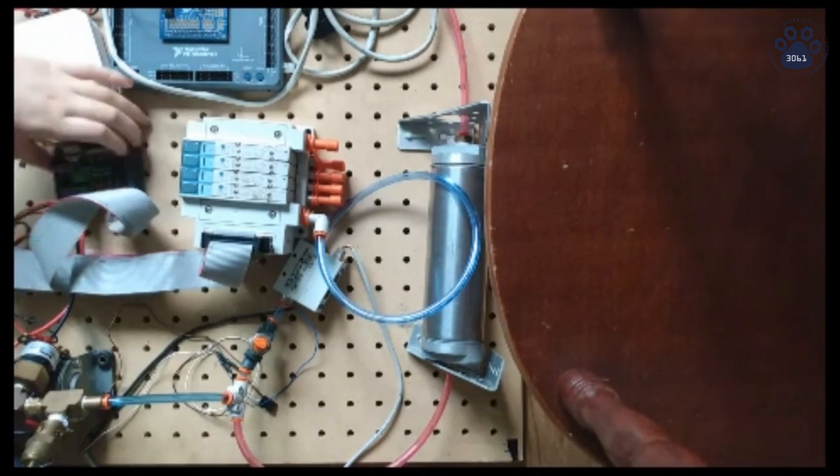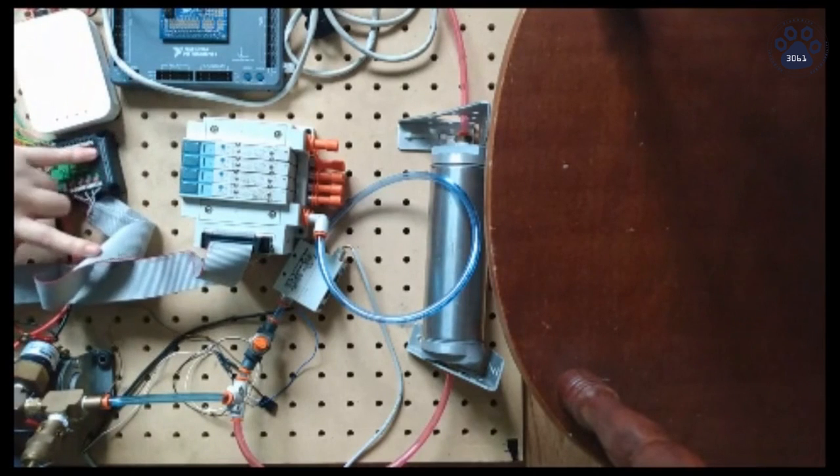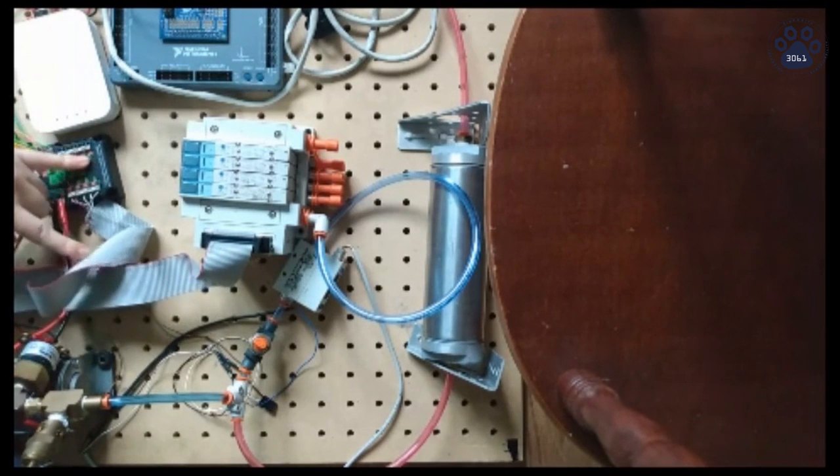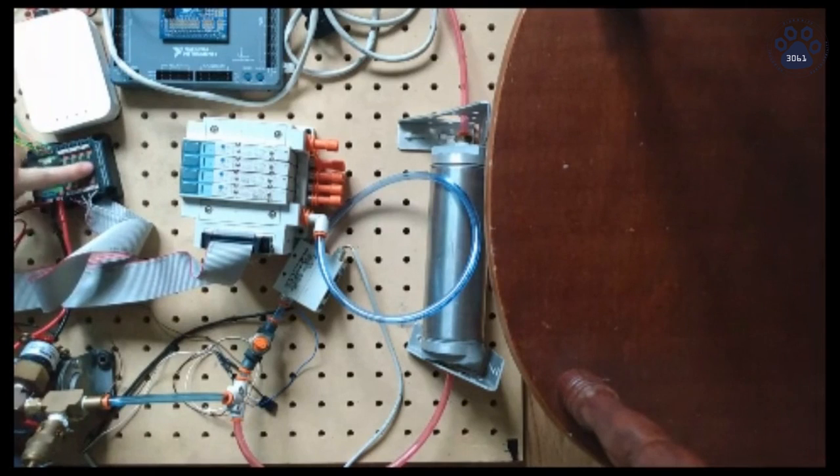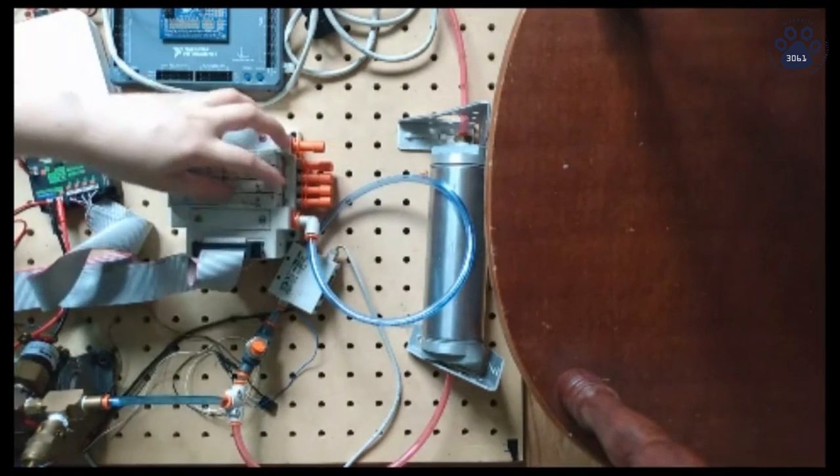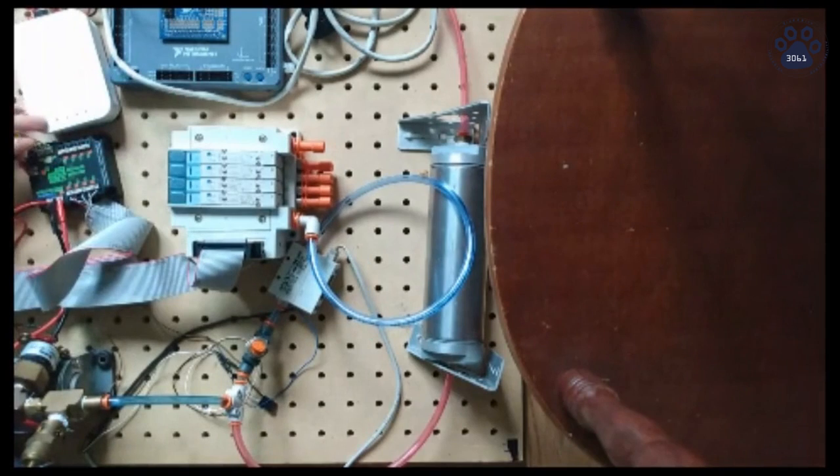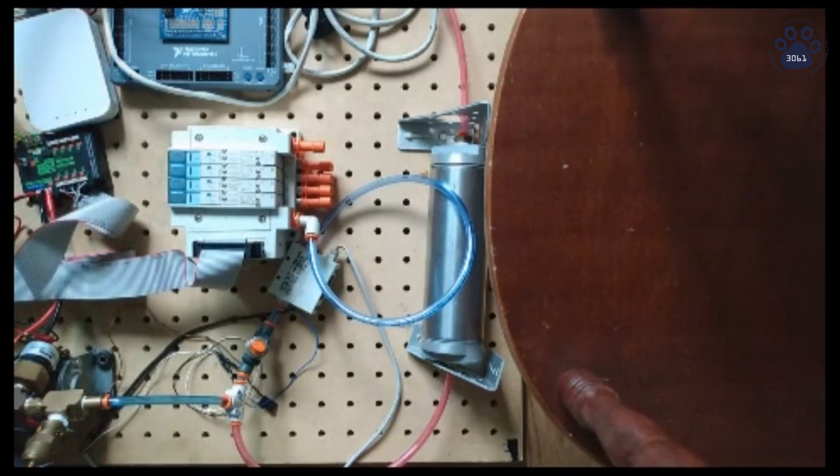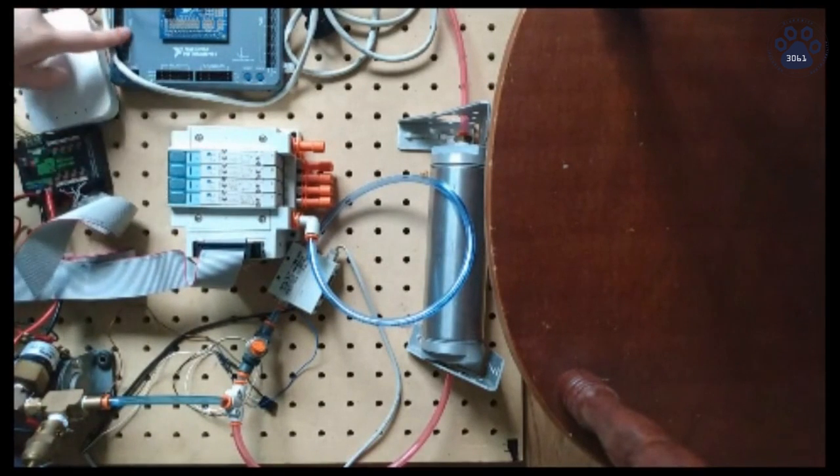So to start, we have the pneumatic control module, which is labeled so you won't get confused, and we always abbreviate it to the PCM. Per its name, it controls pneumatics by signaling to the manifold which solenoids to activate. The PCM receives power from the power distribution panel and code from the RoboRio.